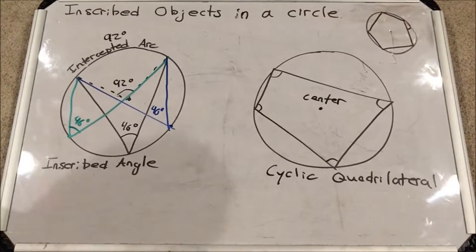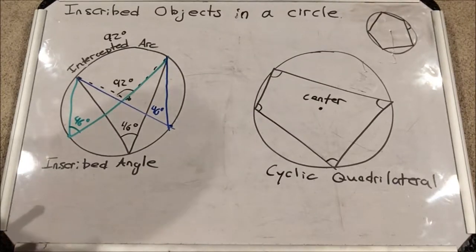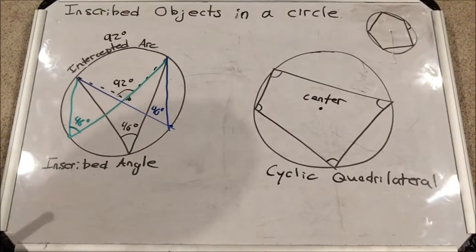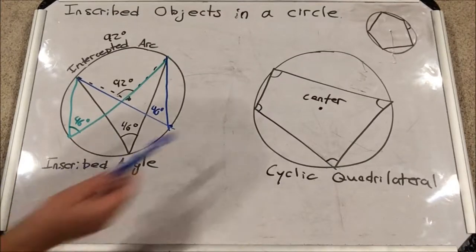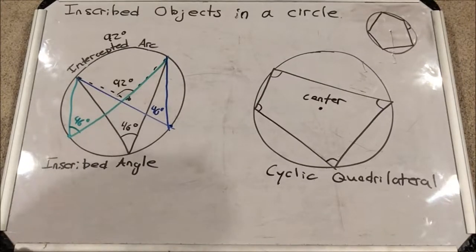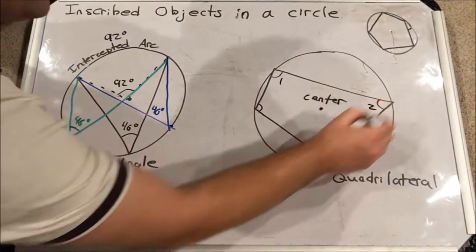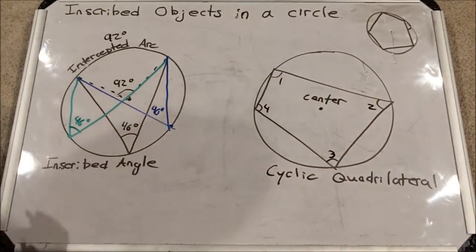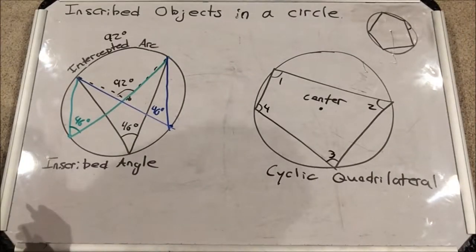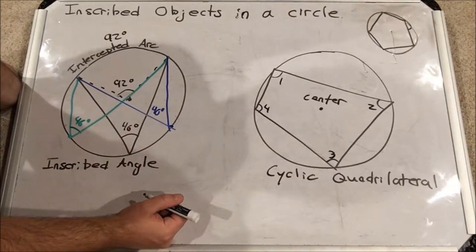So that's what you could do or how you can understand inscribed angles. Now let's look at something else that is very important: inscribed quadrilaterals in a circle. You can either call this an inscribed quadrilateral or a cyclic quadrilateral, as it's called. What's very interesting about these quadrilaterals is that opposite angles—let me label these 1, 2, 3, and 4—opposite angles actually add up to 180 degrees.